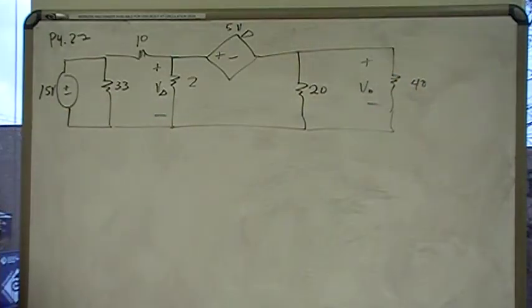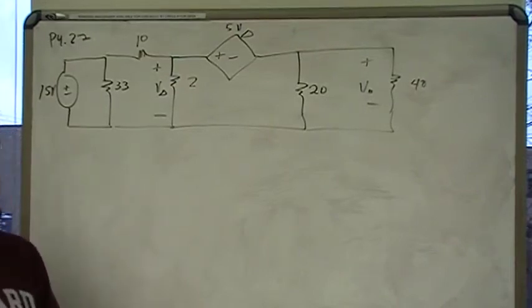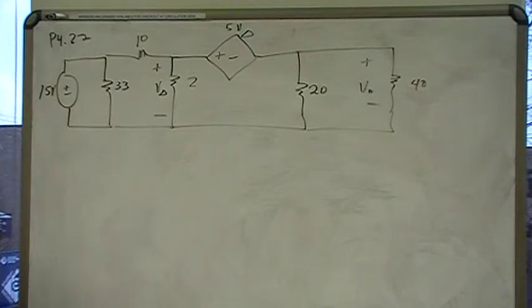The problem wants us to find the voltage drop across that 40 ohm resistor, V out, using the node voltage method. This is a very tricky one to set up because what is the voltage at each of the nodes? First, let's identify the nodes.